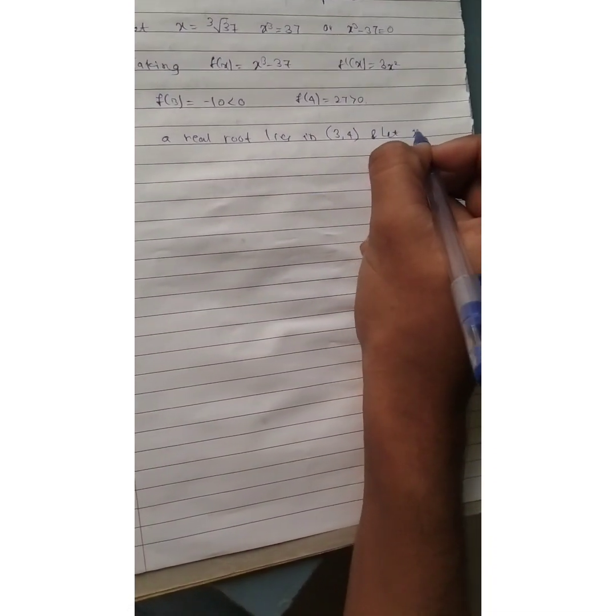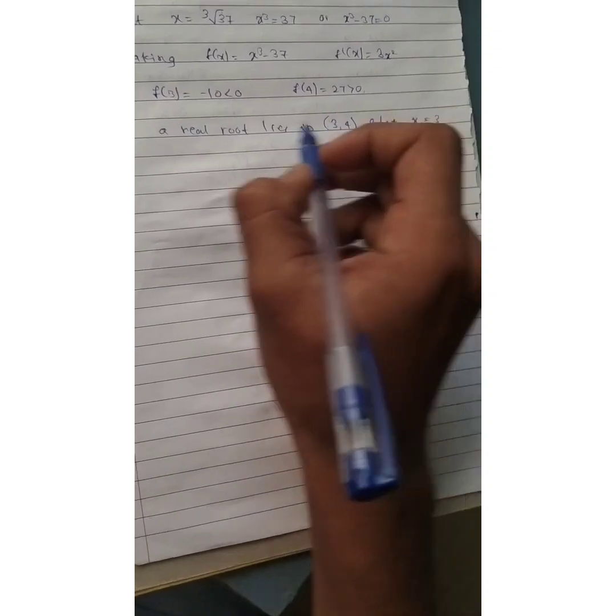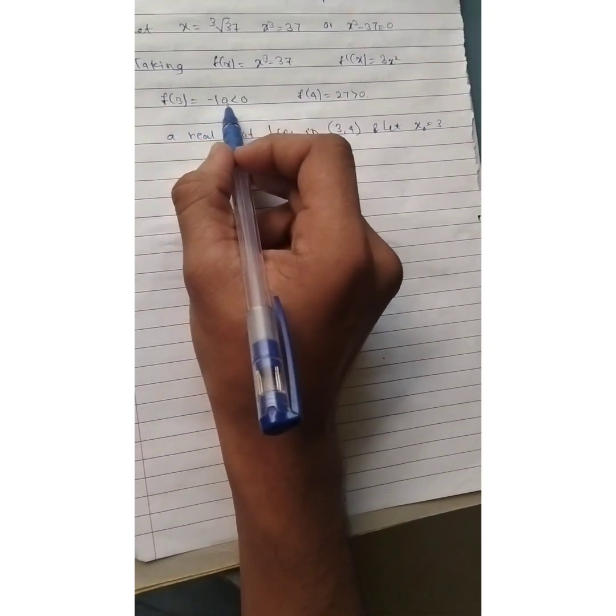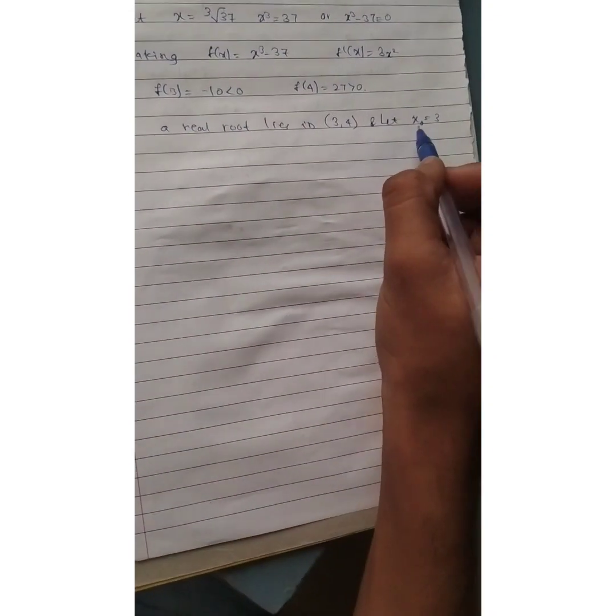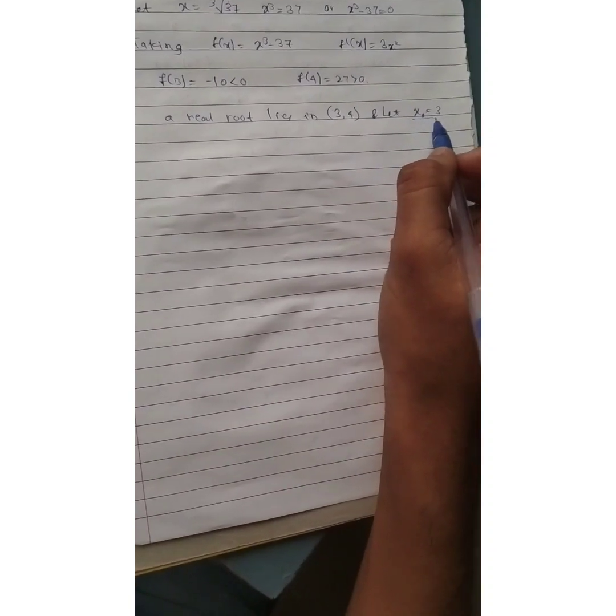And let x0 equal to 3, because f of 3 is equal to minus 10, which is nearer to 0. Hence, here in this problem, x0 is equal to 3.